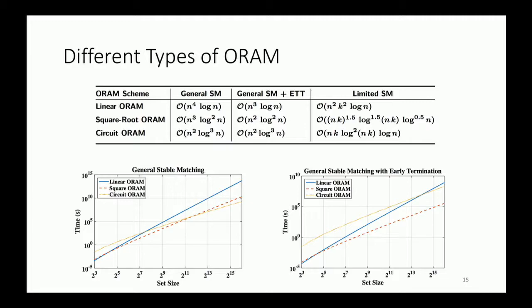And as you can see, linear ORAM is better up to a certain point than both ORAMs, after which square root ORAM comes in and outperforms MUX up to a certain point which is around 4,000 people. And after that, circuit ORAM outperforms all of those solutions.